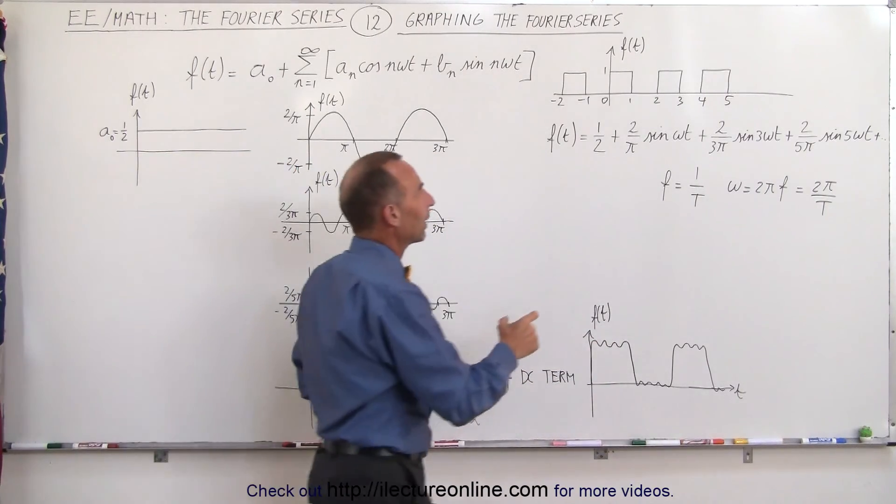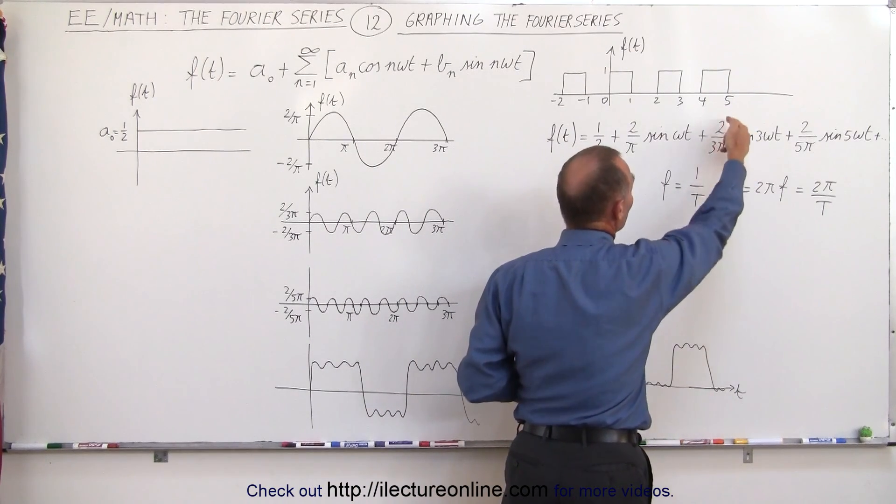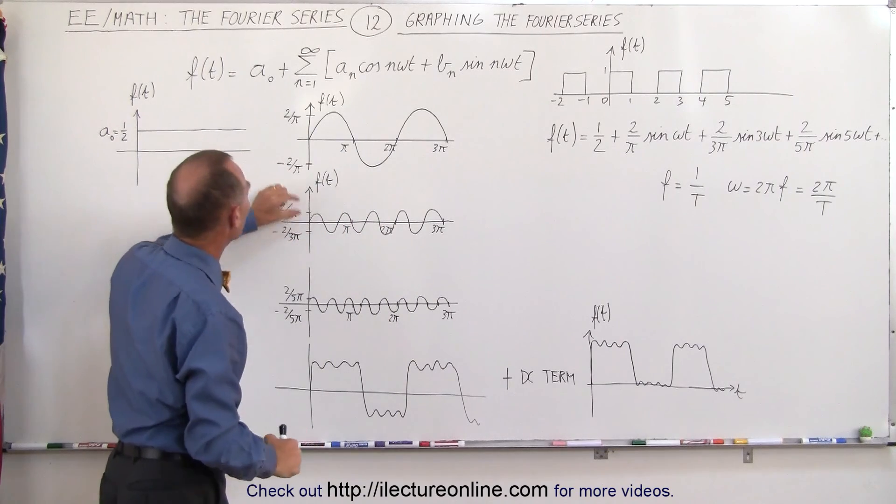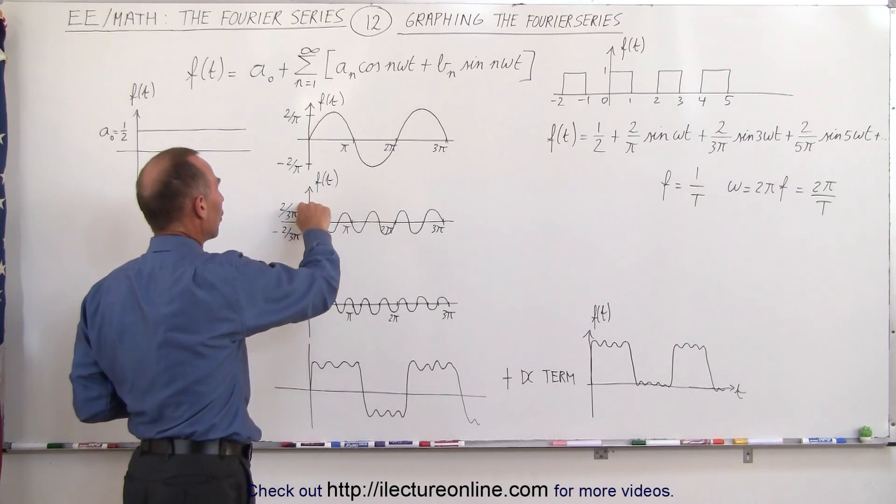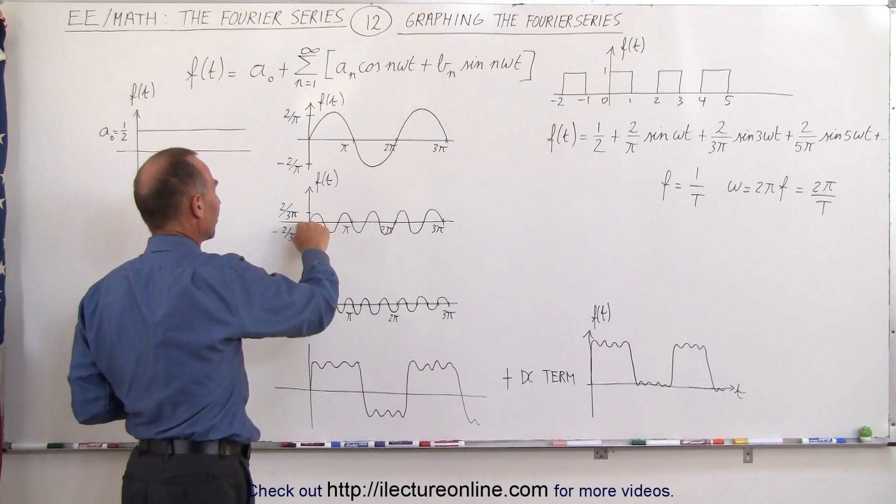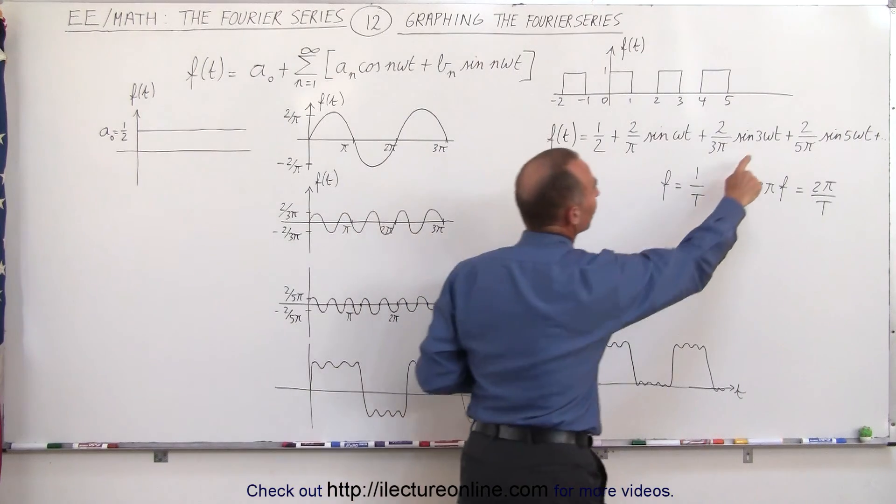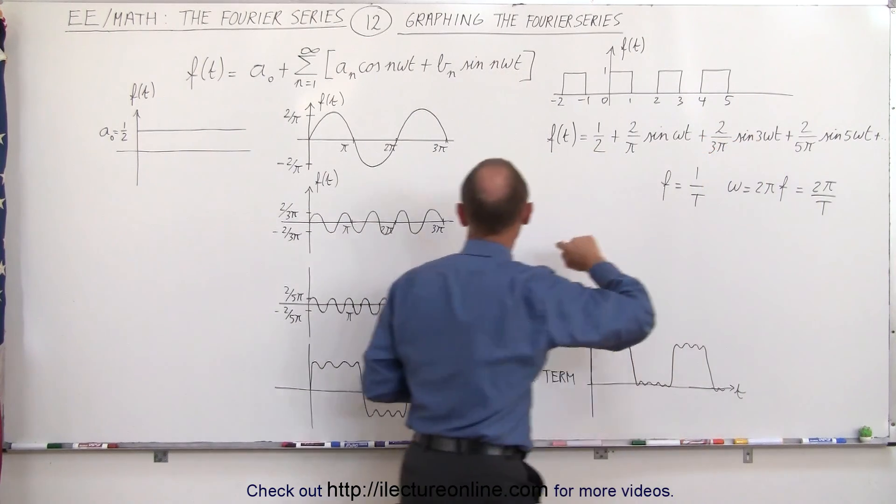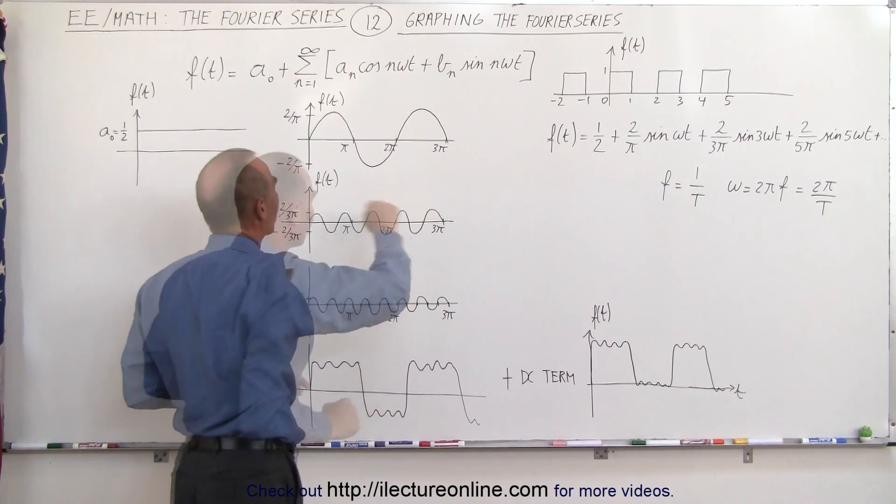The third term right here has a smaller amplitude, 2 over π divided by 3 or 2 over 3π which means the amplitude here is only one-third the amplitude there. You can see that goes from 0 to 2 over 3π to negative 2 over 3π. Also notice that the frequency is 3 times the frequency of this term which means you have 3 times as many oscillations per period.